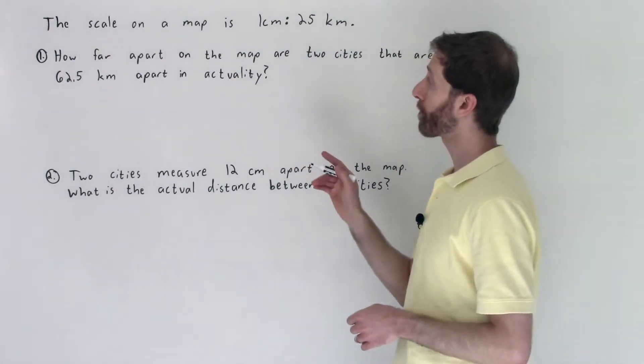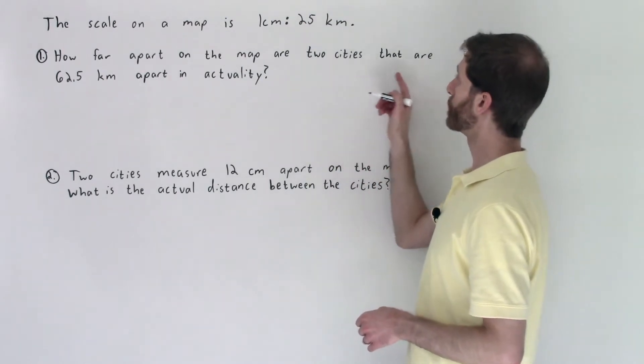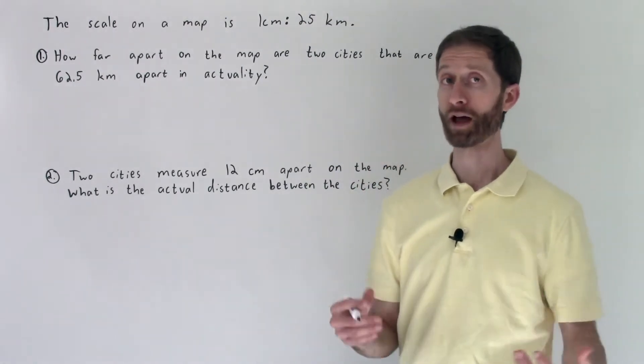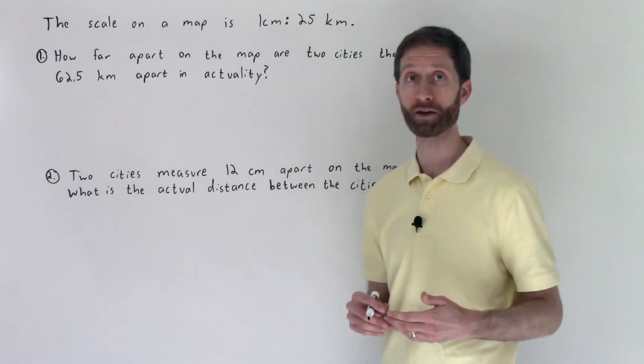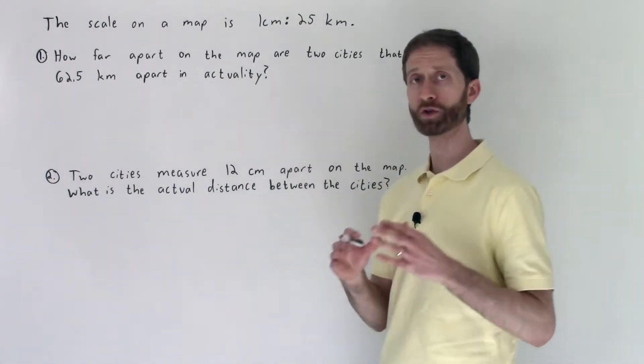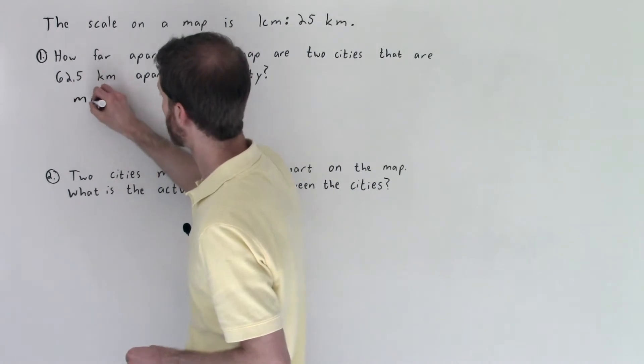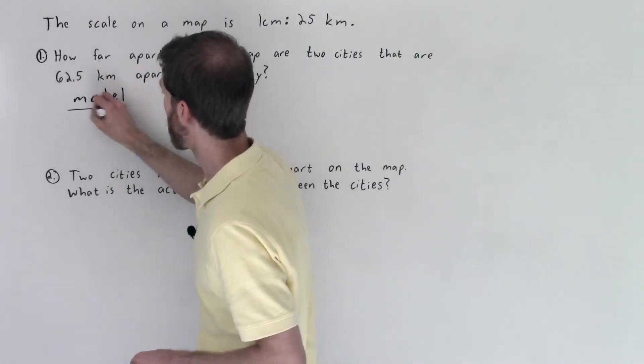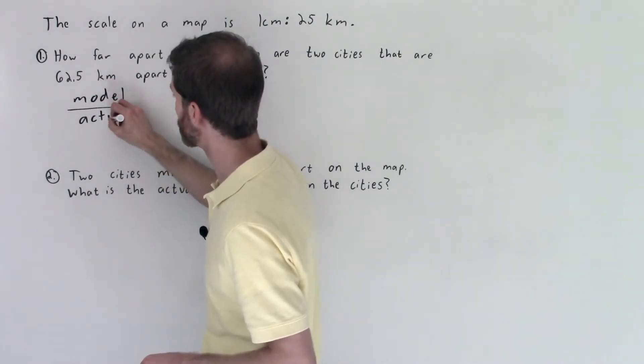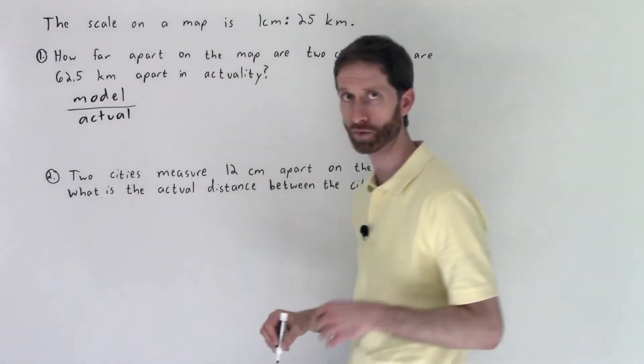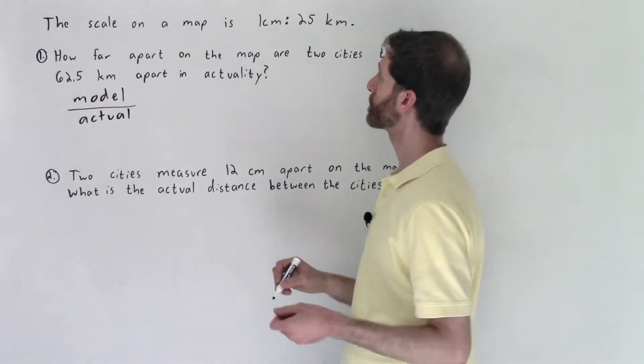How far apart on the map are two cities that are 62.5 kilometers apart in actuality? When we do scale problems, the scale is the model or drawing compared to the actual distance or amount. So model to actual is what we're keeping in our head.